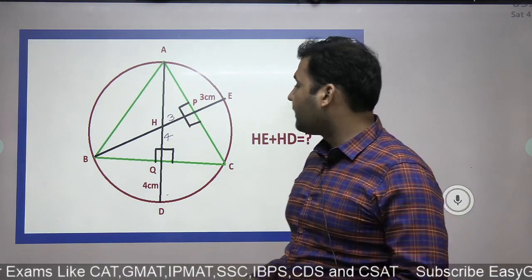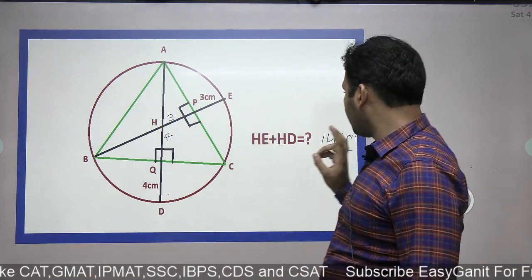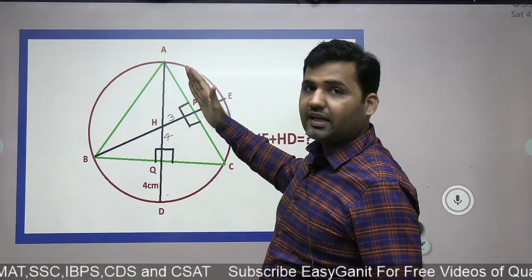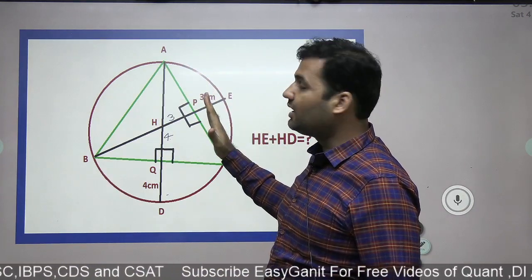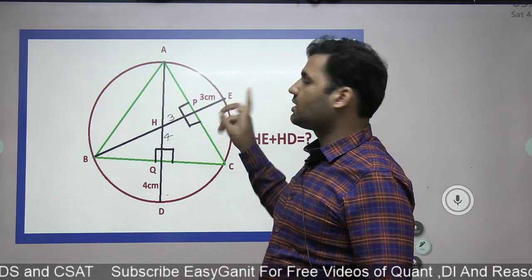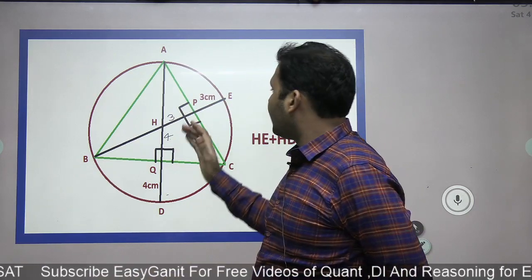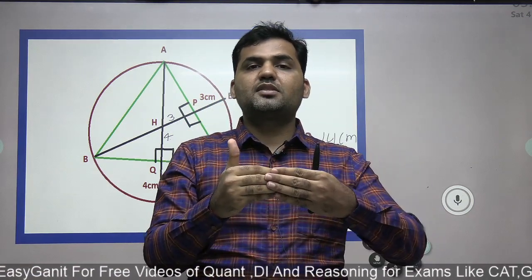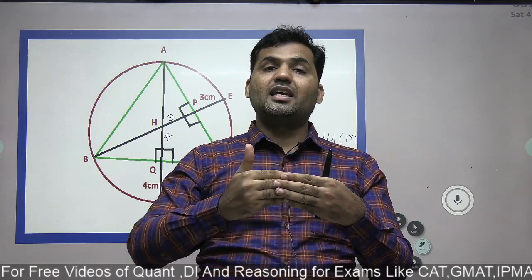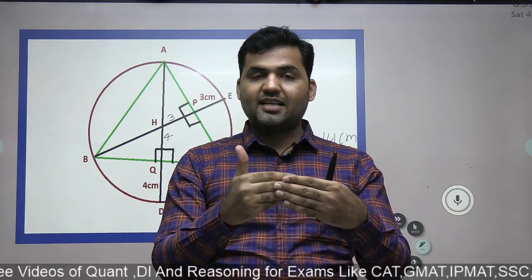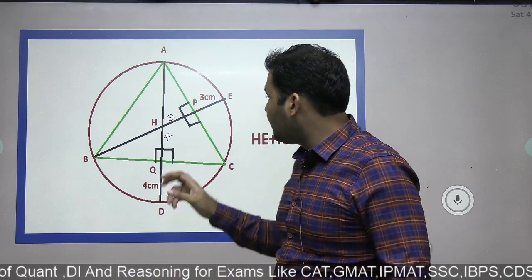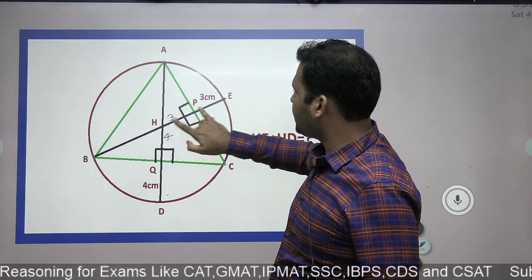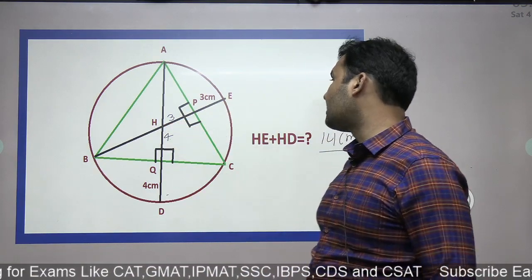Let me restate the rule. The rule is: the orthocenter, when reflected from any side of the triangle, the image of the orthocenter will be made on the circumference of the circle. Think of it like a mirror — when you see yourself in a mirror, your image is at the same distance from the mirror as you are. So E is the image of the orthocenter H, meaning the length of HP and PE are the same, and the length of HQ and QD are also the same.